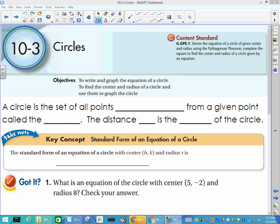Today's lesson covers circles, section 10.3. This should be a really easy lesson because you hopefully covered this last year in geometry. To refresh your memory, a circle is the set of all points equidistant from a given point called the center. The distance r is the radius of that circle.